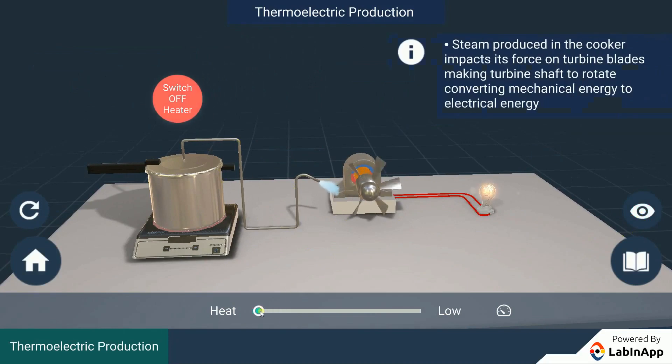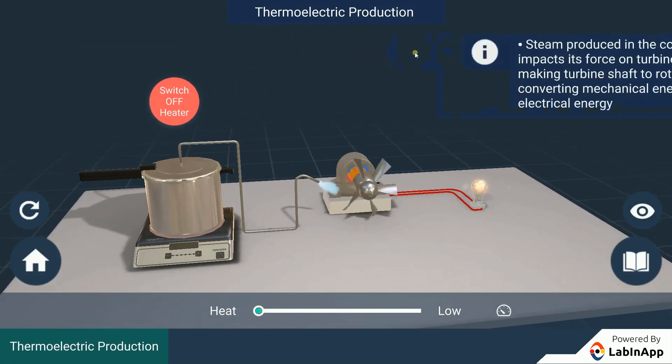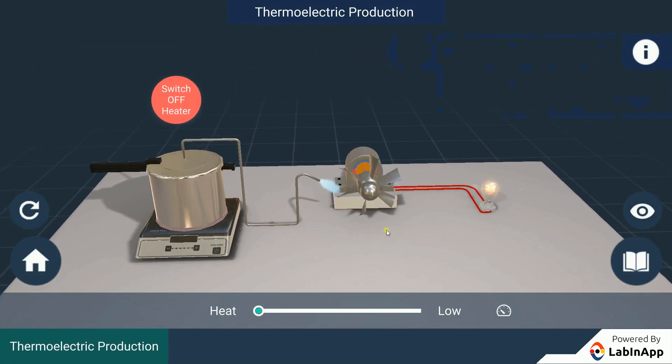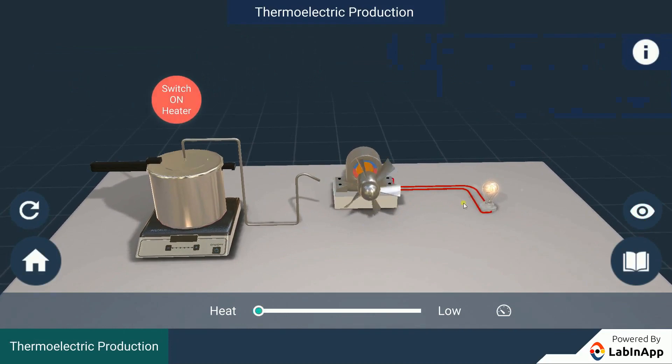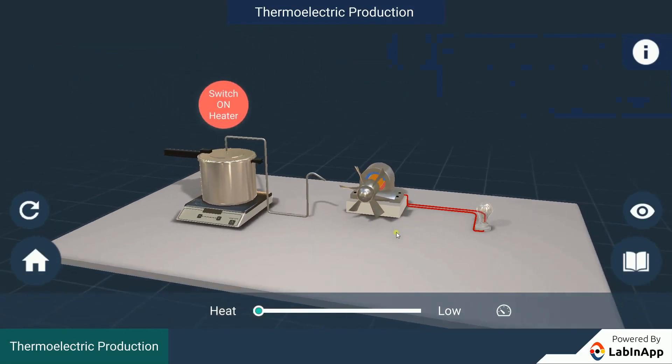The steam acts on the blades and spins to impart energy to the rotor. Thus, we see that the rotor blades rotate with speed which turns the shaft of the dynamo and converts the mechanical energy into electrical energy.